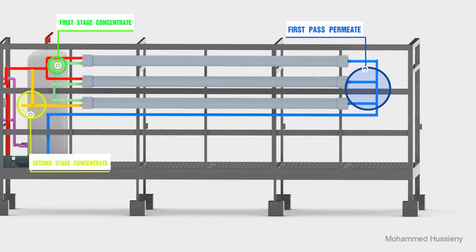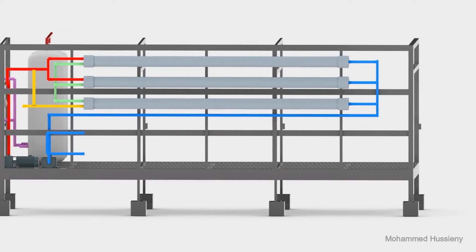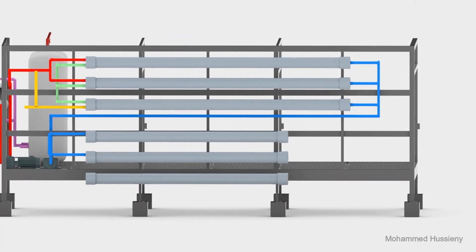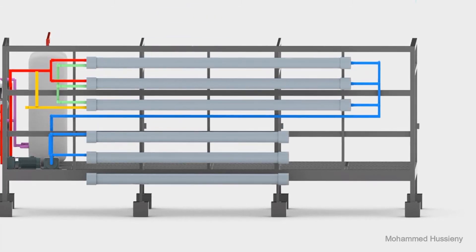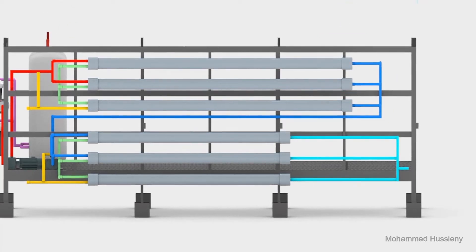The permeate flow of the first and second stages of the first pass gets pumped and fed to the second pass. Similar to the first pass, the second pass is composed of two stages, and the concentrate flow of the first stage is fed to the second stage. And the concentrate flow of the second stage gets recycled back to the RO system.